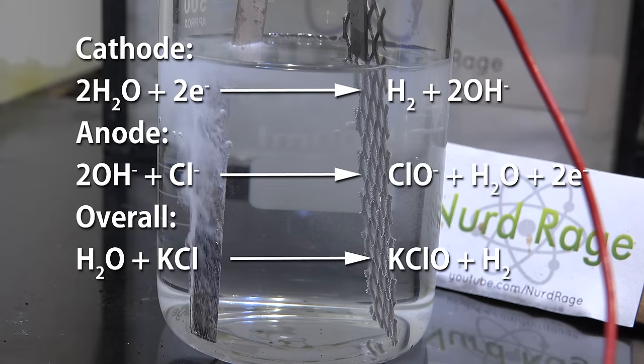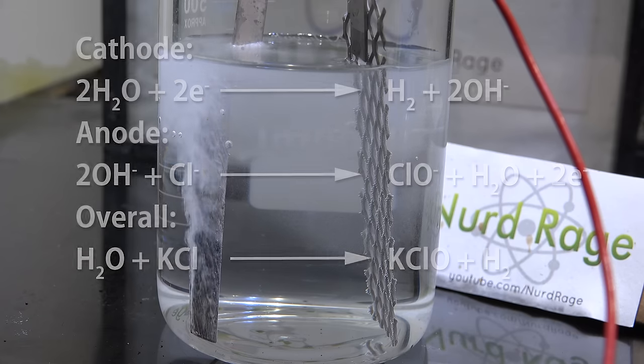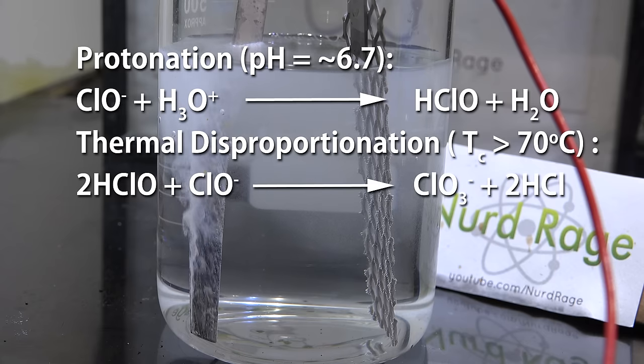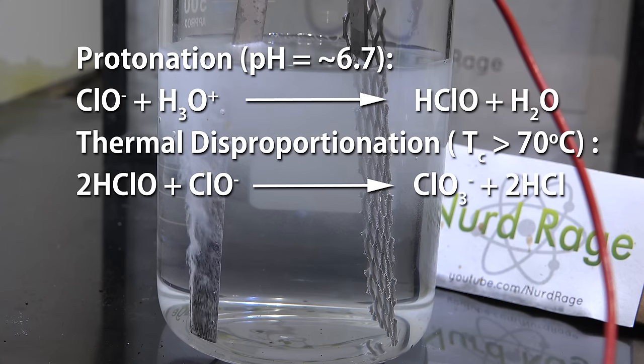Rather than producing potassium chlorate directly, what this really does is create potassium hypochlorite first. In order for this to make potassium chlorate the pH must be maintained at around 6.7 to protonate some of the hypochlorite into hypochlorous acid. Then if the cell were run at a higher temperature, say above 70 celsius, the ions would disproportionate into potassium chloride and potassium chlorate. In a basic cell this doesn't happen because not only are we just running at room temperature, but the pH actually drifts away from ideal very quickly.